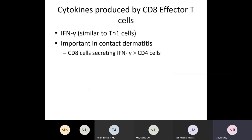Regarding cytokines produced by CD8 effector cells or CTLs: one important one is interferon gamma, which plays a role in contact dermatitis. CD8 cells can secrete interferon gamma — perhaps even more than CD4 cells — and this plays a role in contact dermatitis.